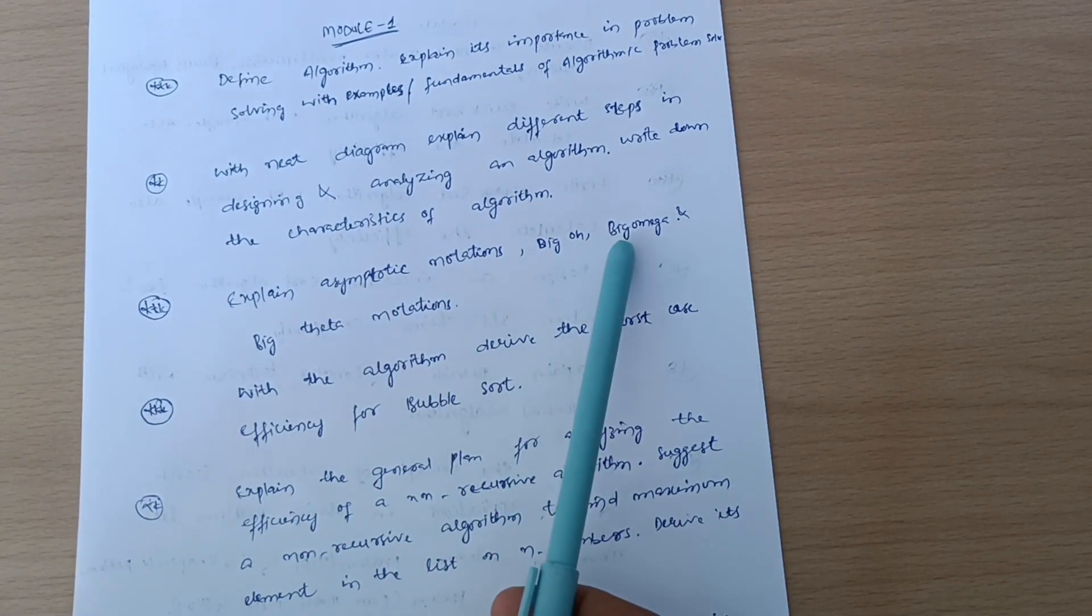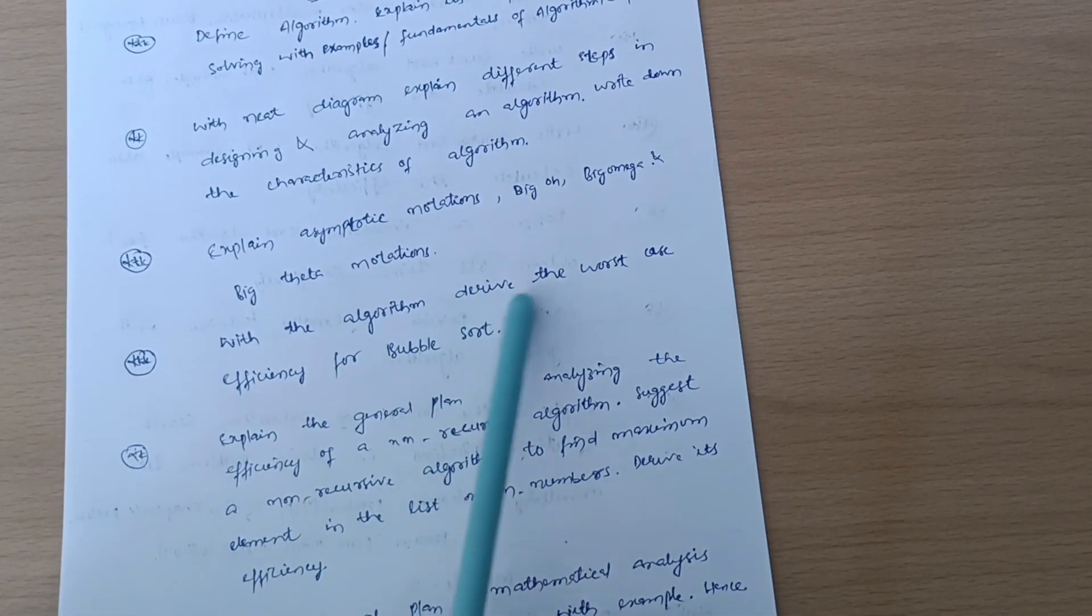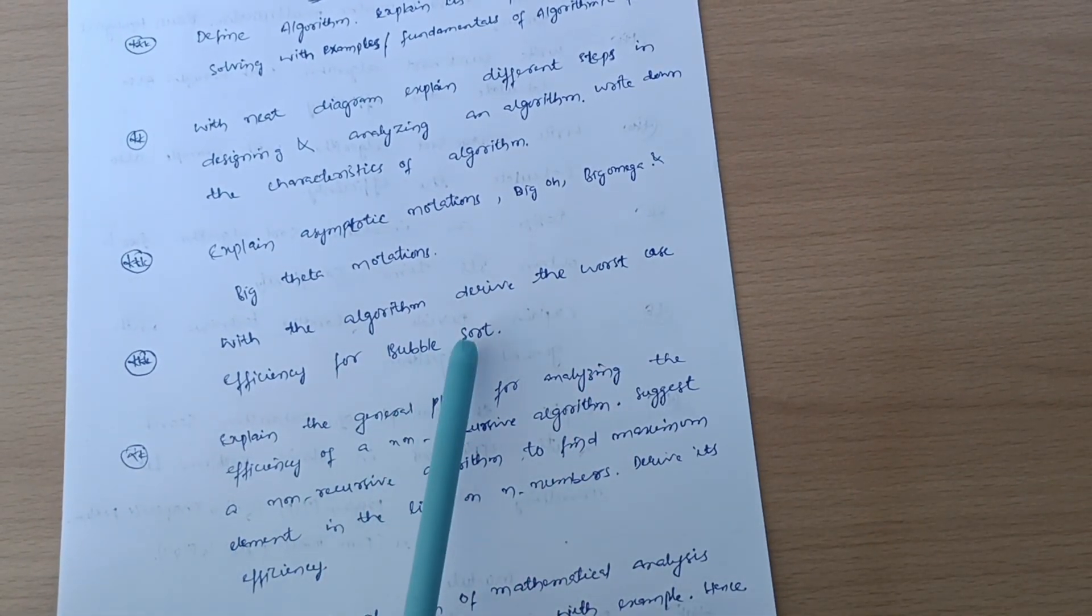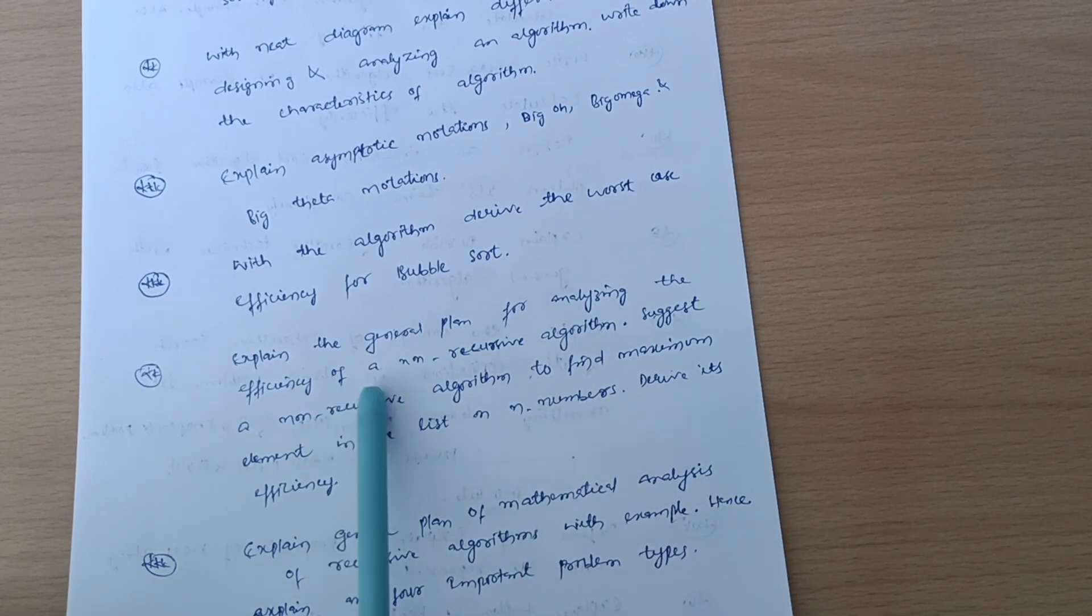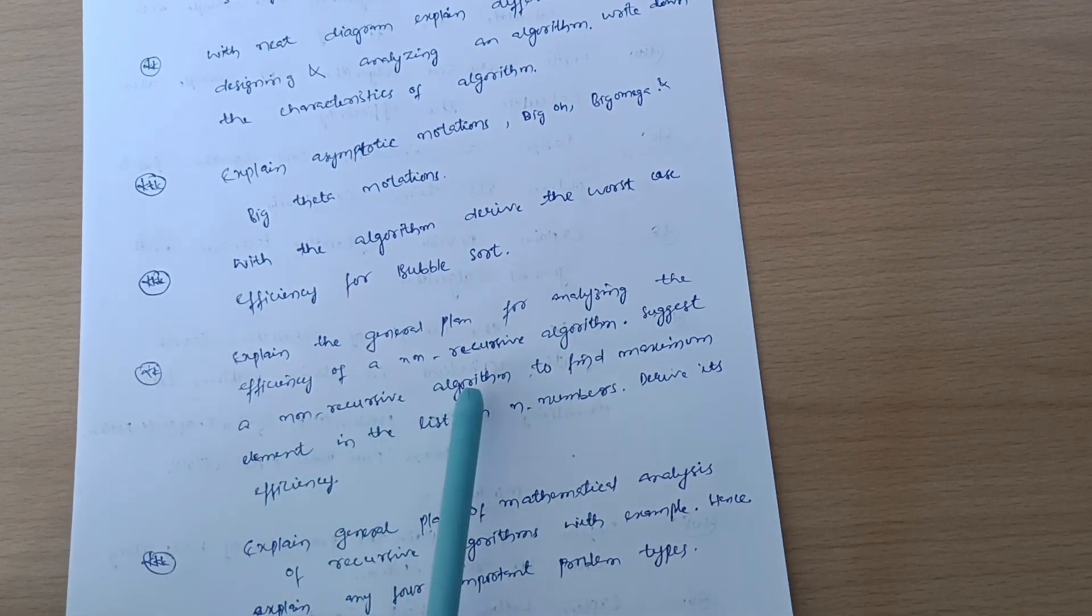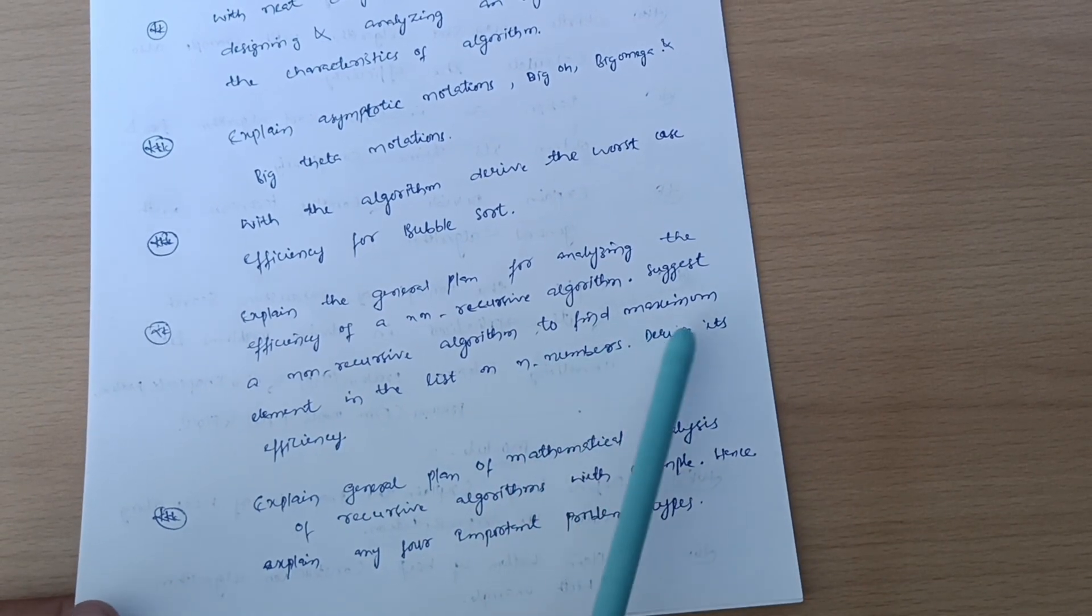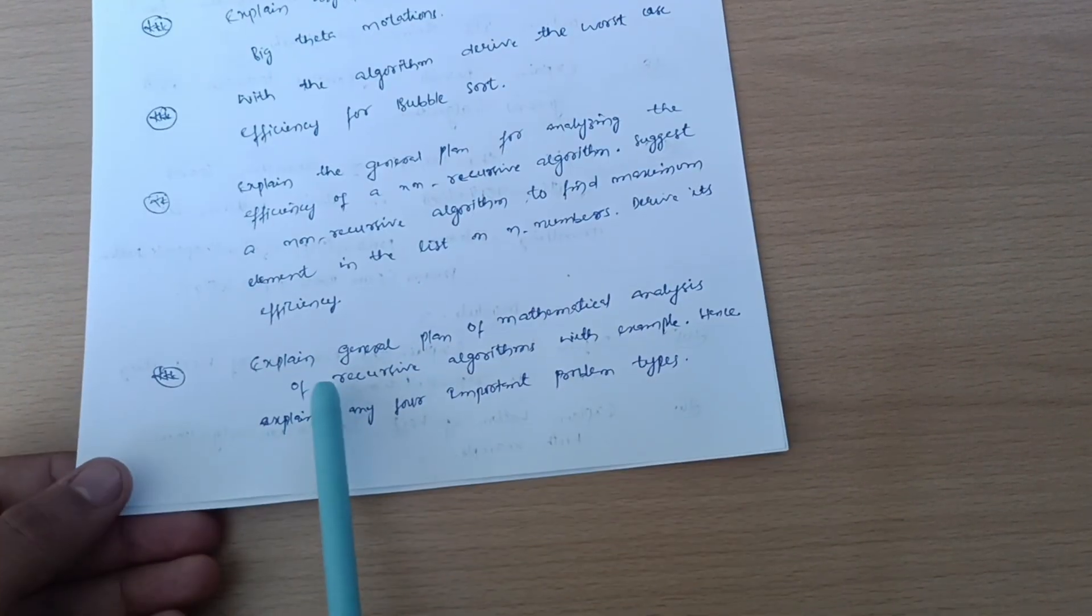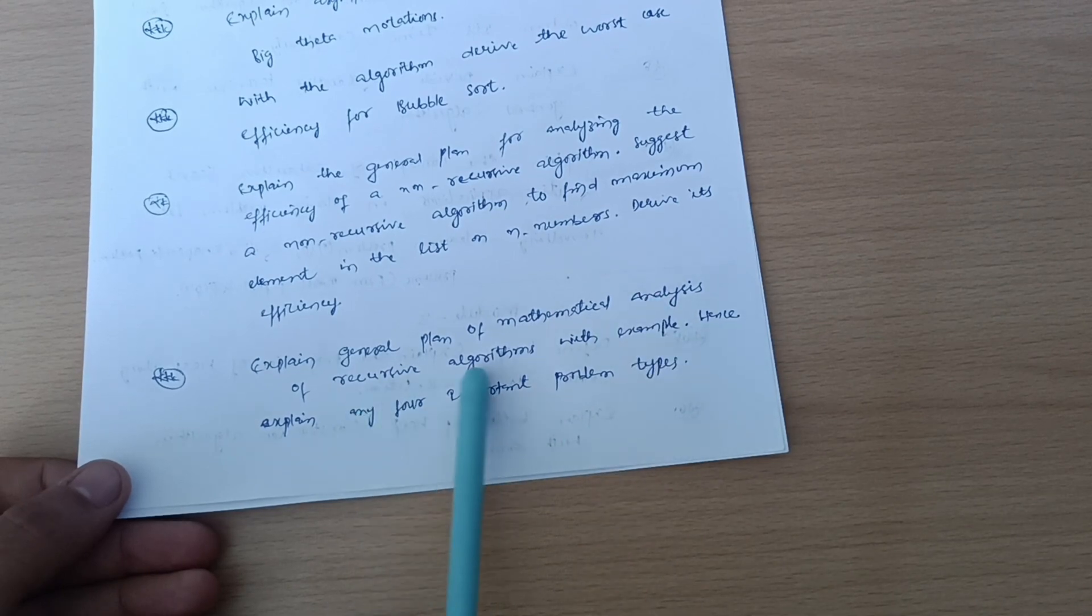Explain asymptotic notations: Big O, Big Omega, and Big Theta notations. With the algorithm, derive the worst case efficiency for bubble sort. Explain the general plan for analyzing the efficiency of a non-recursive algorithm. Suggest a non-recursive algorithm to find maximum element in a list of n numbers and derive its efficiency.